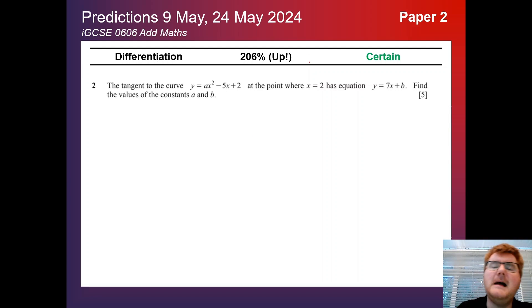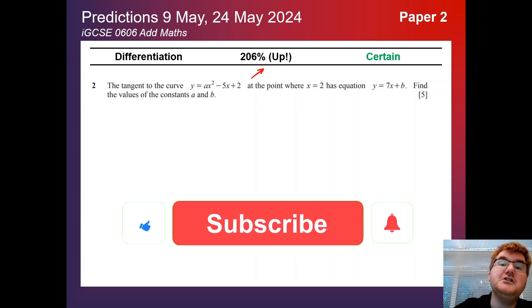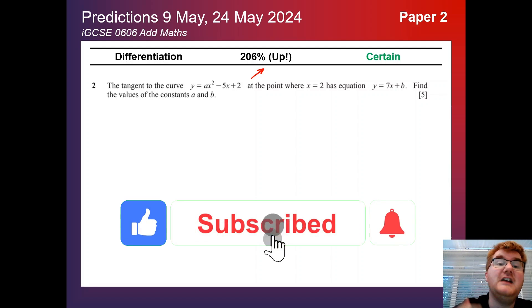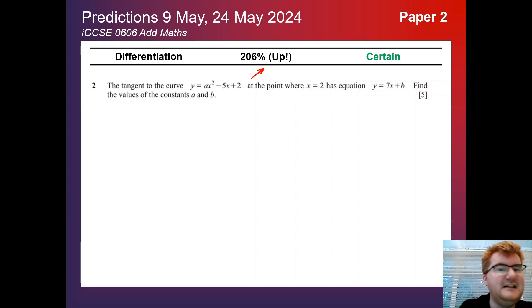Differentiation, which is a mad 206%. So on average, on Paper 2, you'll get two questions that involve differentiation. So there's one topic you should revise and really prioritize is differentiation and integration. This is an easy style question you could be asked at the start of the paper.